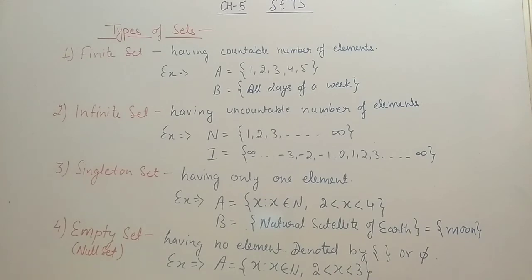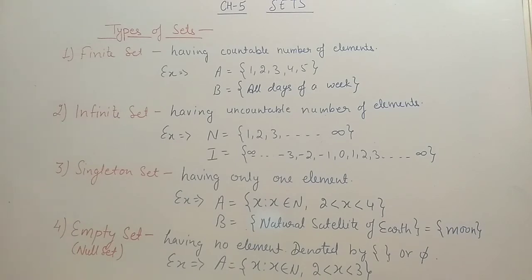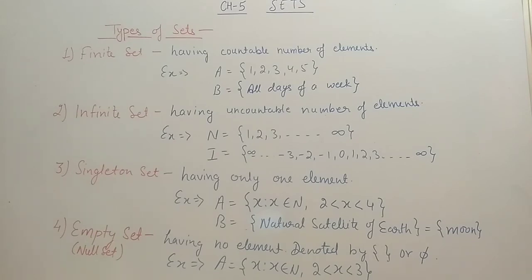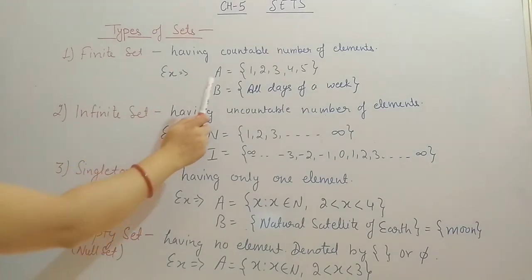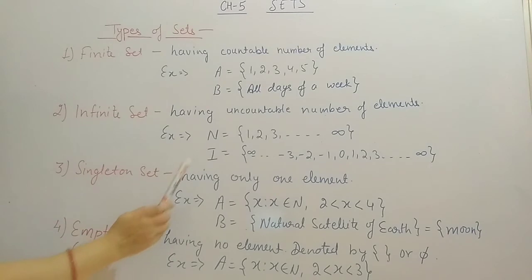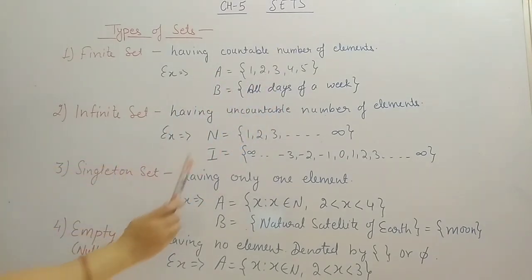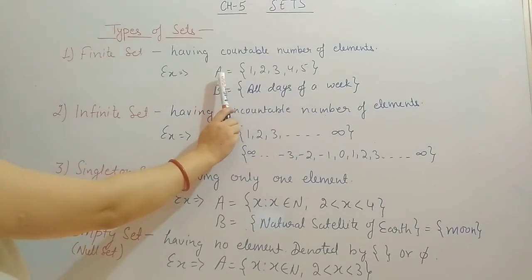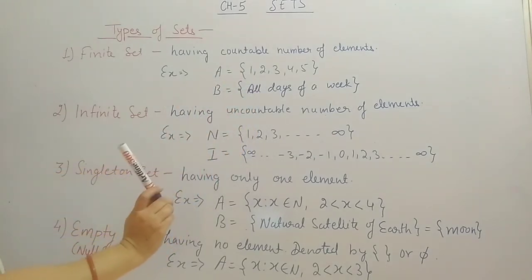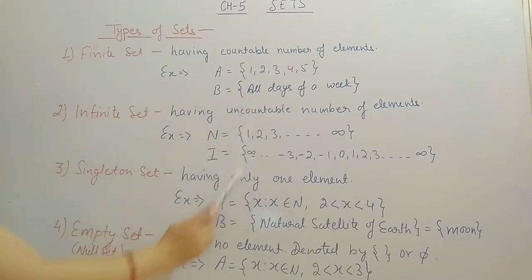Next we have types of sets. The first type is a finite set. Finite means which we can count — a set having a countable number of elements. For example, A = {1, 2, 3, 4, 5} has 5 elements which we can count. Another example, B = all days of a week — we can count 7 days. So both of these are finite sets.